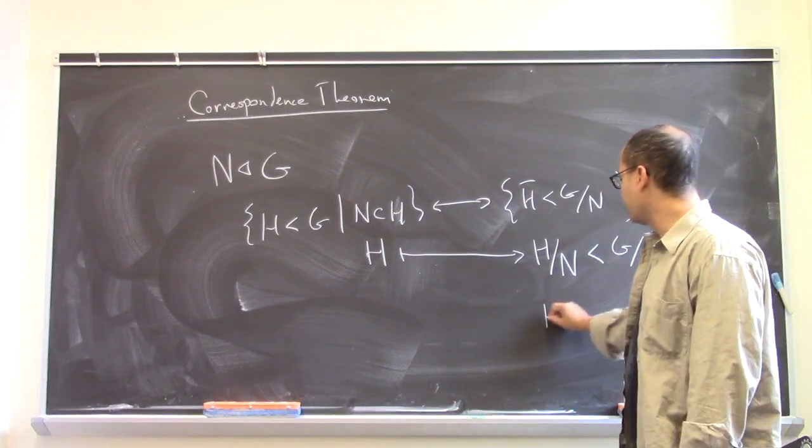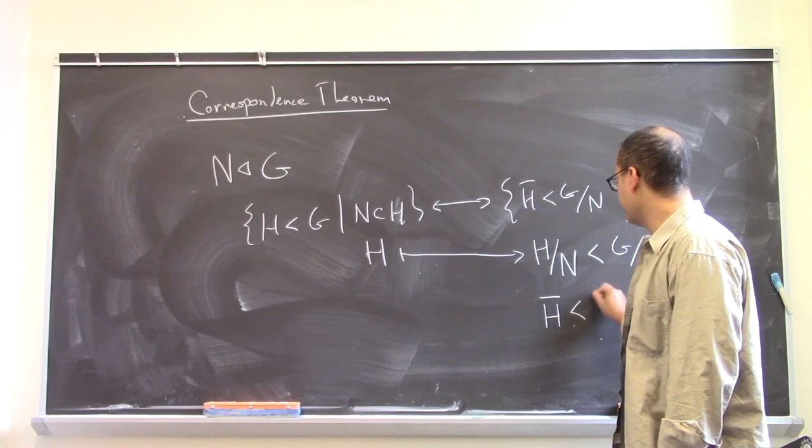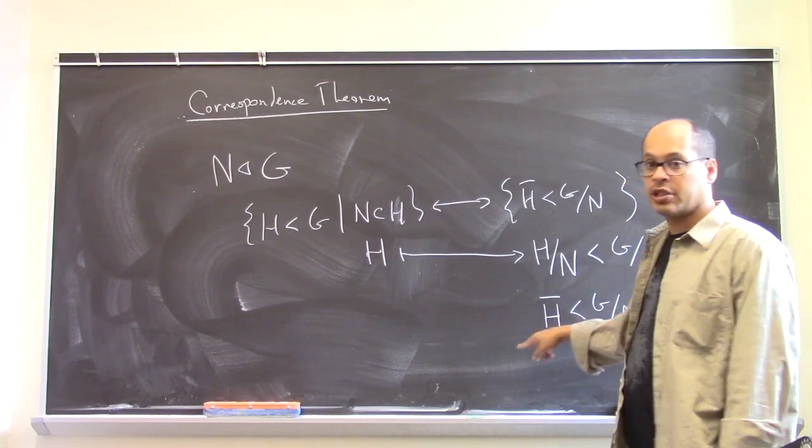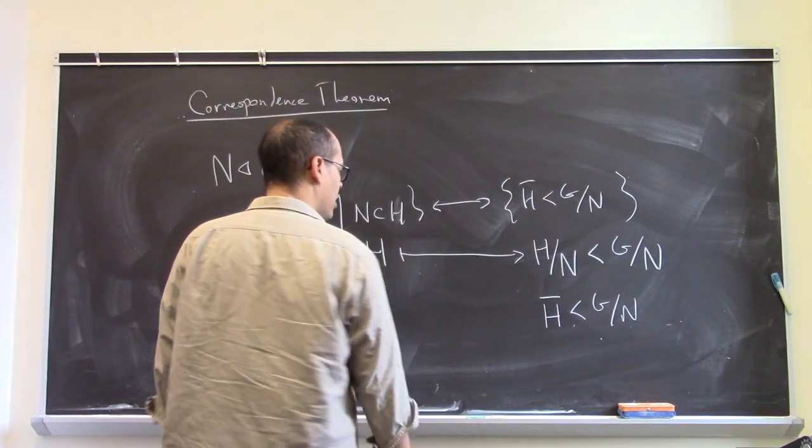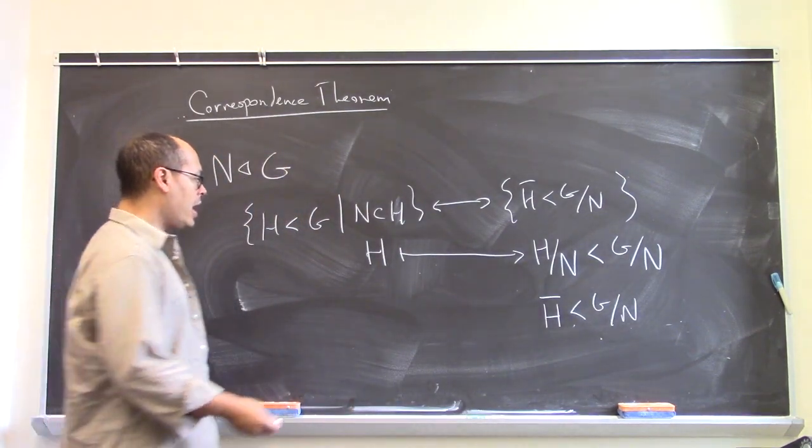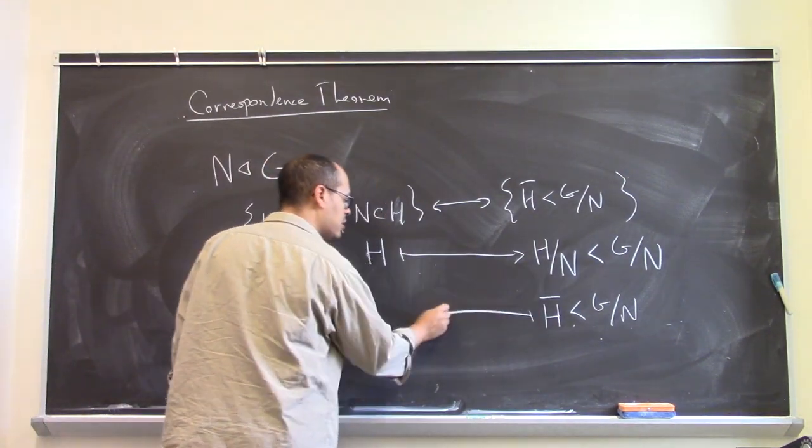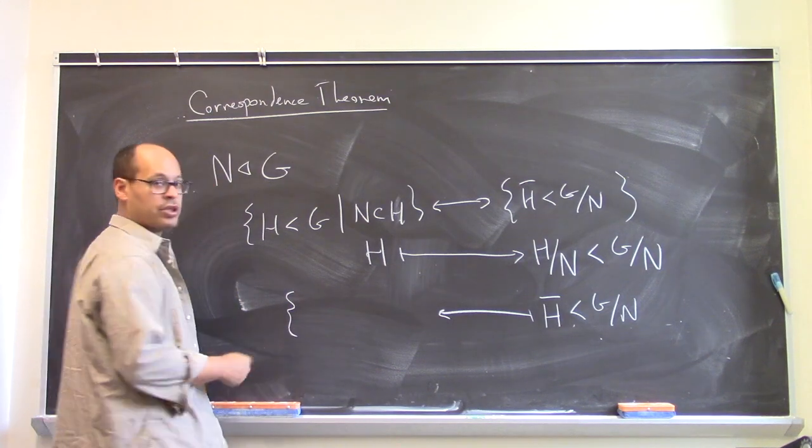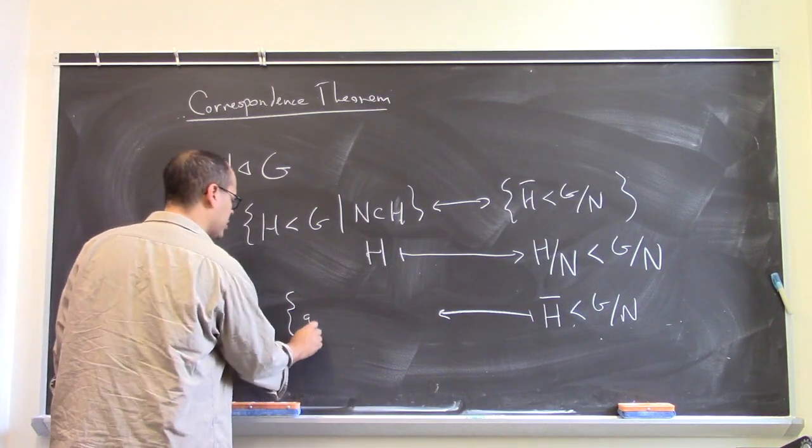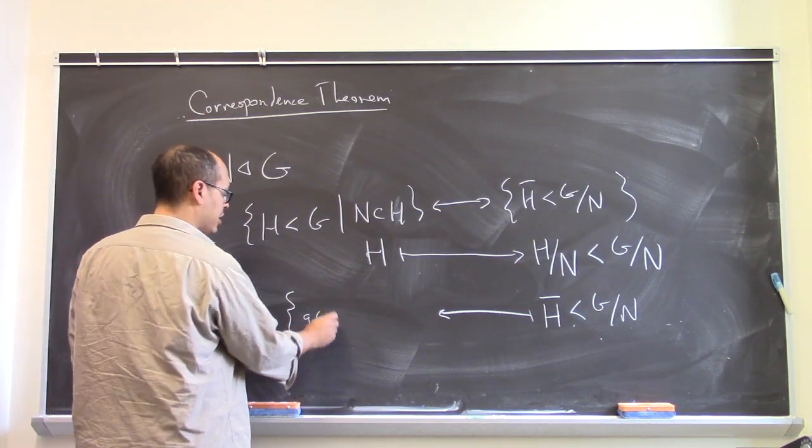Going in the other direction, if you have a subgroup of G mod N, this is a collection of left cosets of N. And we take that to the set of potential representatives of that coset. So these are the G's inside of G,